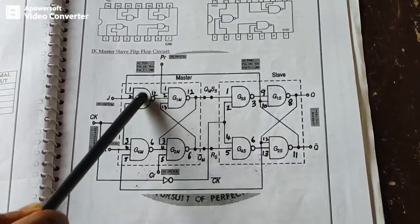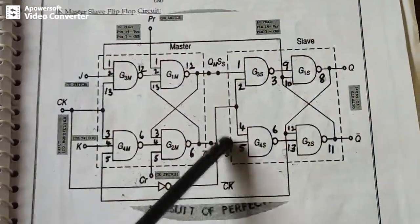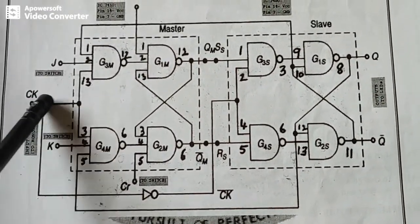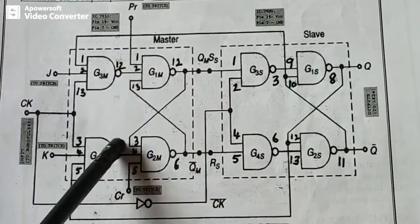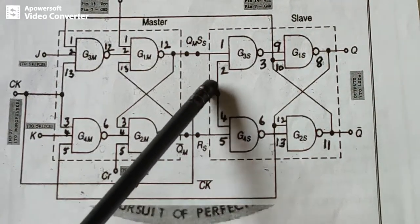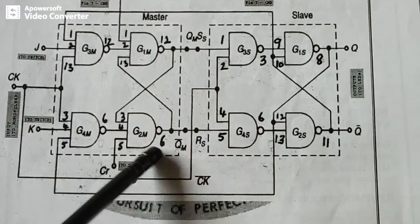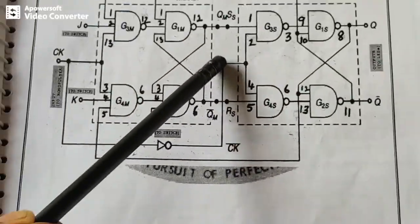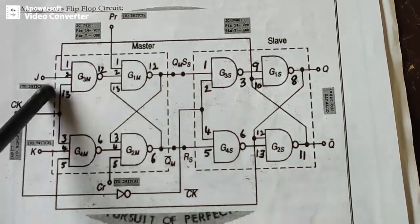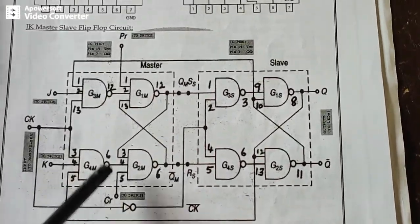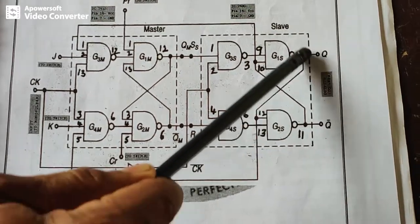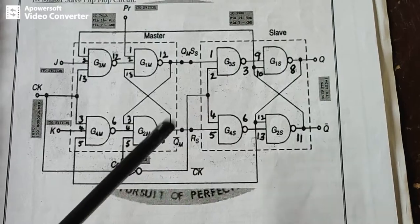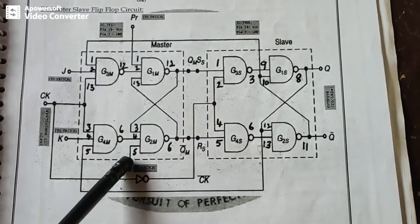In the circuit diagram you can see the master section and the slave section. The clock goes directly to the master section, and the same clock — inverted via an inverter — goes to the slave section. This means the master section works during the positive cycle of the clock and the slave works during the negative cycle, which is how we avoid the race-around condition in the JK flip-flop.